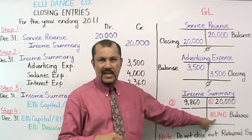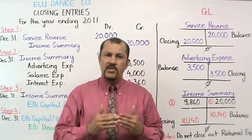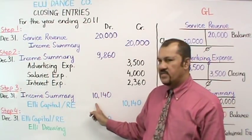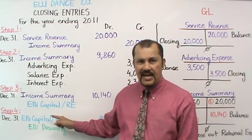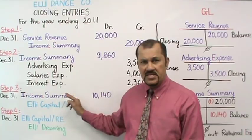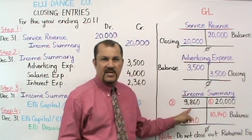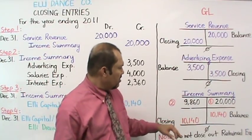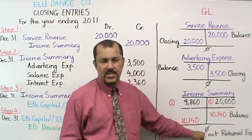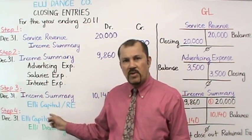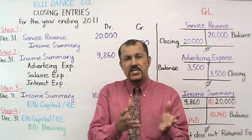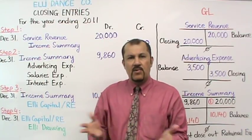Your job in step three is to take this credit balance of $10,140 and bring it to a zero balance. You do that by creating another closing entry in step three which will debit the income summary for $10,140. The offsetting account will go to your capital account if it's a proprietorship, or to retained earnings if it's a corporation. When you make entry number three with a debit to income summary of $10,140 and post that to your income summary ledger account, that will give you a zero balance. What is important to remember is that when you credit your capital account or retained earnings account, that amount represents your net income, which is getting shifted into your capital or retained earnings account, increasing it.